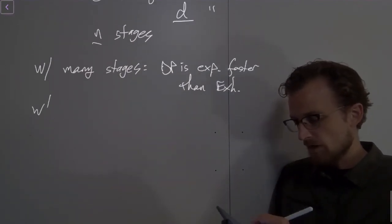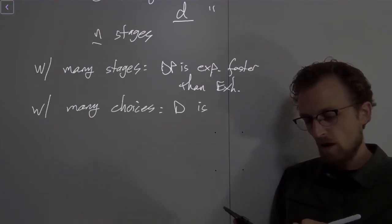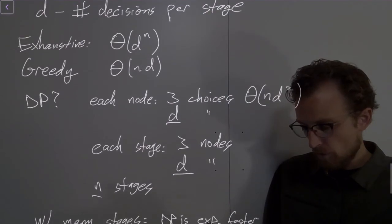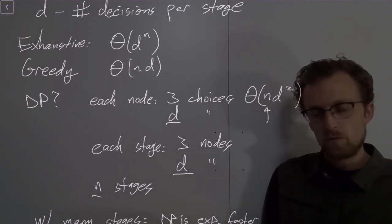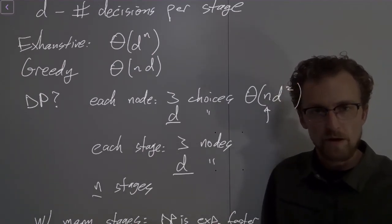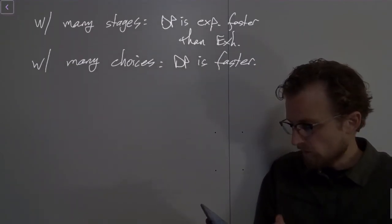So again, with many decisions to make, or many choices, DP is faster as well. And you give something up: you do end up with this linear factor that doesn't exist on the exhaustive search one. But in any case, you're considerably better off.